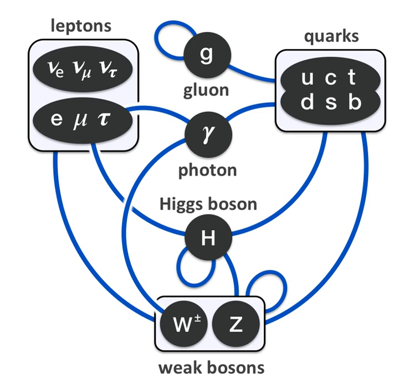Theoretical and experimental research has attempted to extend the standard model into a unified field theory or a theory of everything, a complete theory explaining all physical phenomena including constants. Inadequacies of the standard model that motivate such research include: The model does not explain gravitation, although physical confirmation of a theoretical particle known as a graviton would account for it to a degree. Though it addresses strong and electroweak interactions, the standard model does not consistently explain the canonical theory of gravitation, general relativity, in terms of quantum field theory. The reason for this is, among other things, that quantum field theories of gravity generally break down before reaching the Planck scale. As a consequence, we have no reliable theory for the very early universe.